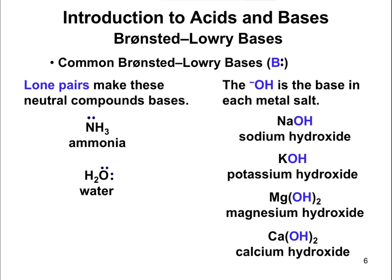Here are some common bases. Examples on the left have lone pairs — like water, where oxygens have a lone pair, and nitrogen, which always has a lone pair. Recall from Chapter 3: carbon forms four bonds with no lone pairs, nitrogen forms three bonds with a lone pair, and oxygen forms two bonds with two lone pairs. So anything containing nitrogen is going to be a base. On the right, these molecules have the OH− polyatomic ion, which makes them bases because the O in OH− has lone pairs of electrons.